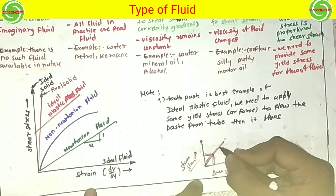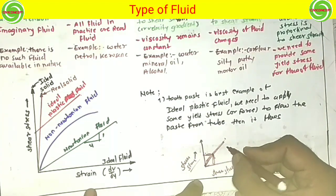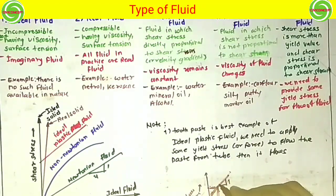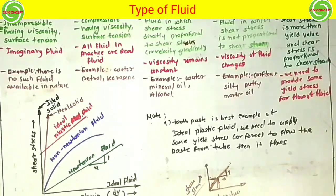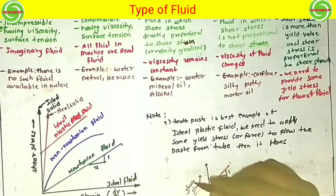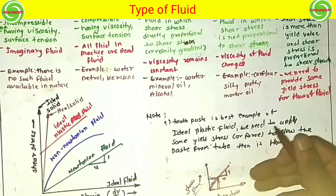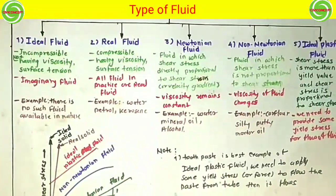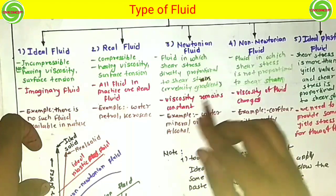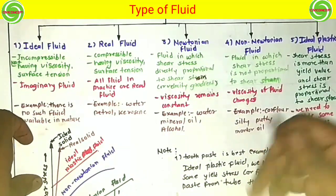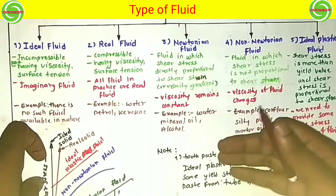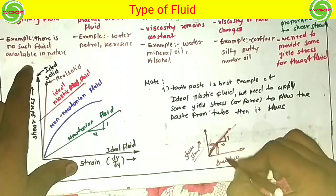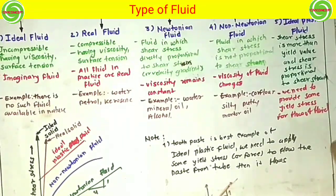Whichever fluid possesses this type of property is a Newtonian fluid. The shear stress is also proportional to the velocity gradient — as the gradient increases, shear stress and shear strain also increase. In a Newtonian fluid, the viscosity remains constant, and it shows a linear relationship between shear stress and shear strain.